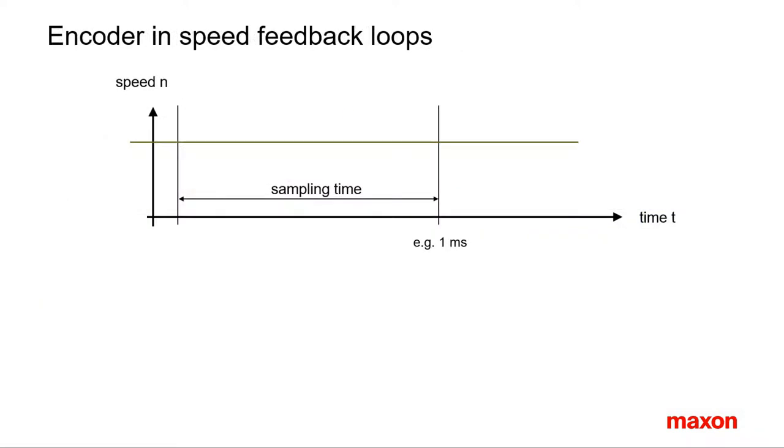What is the optimum encoder resolution for speed feedback? This question is not that easy to answer. There are many influencing factors. What can happen to speed within one sampling period of the speed controller?